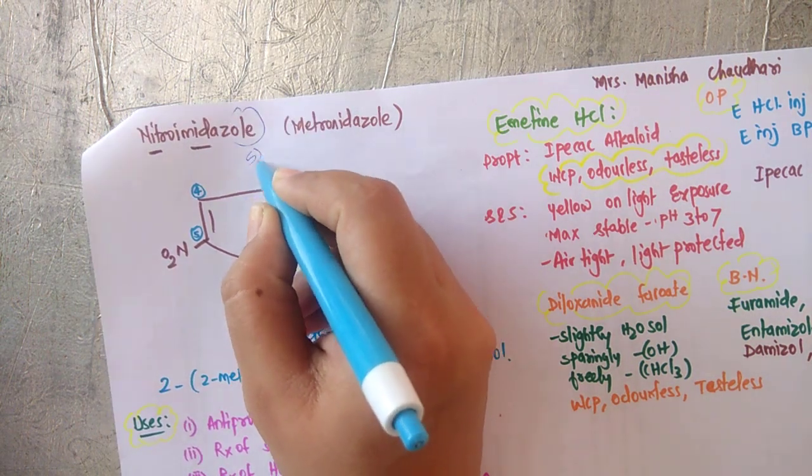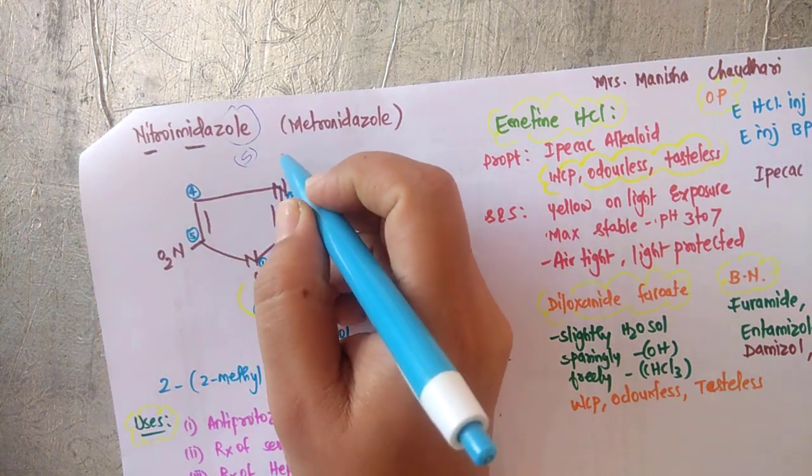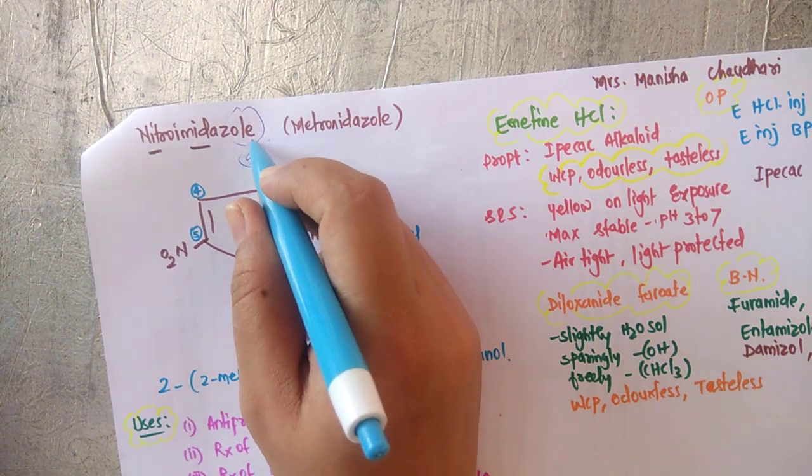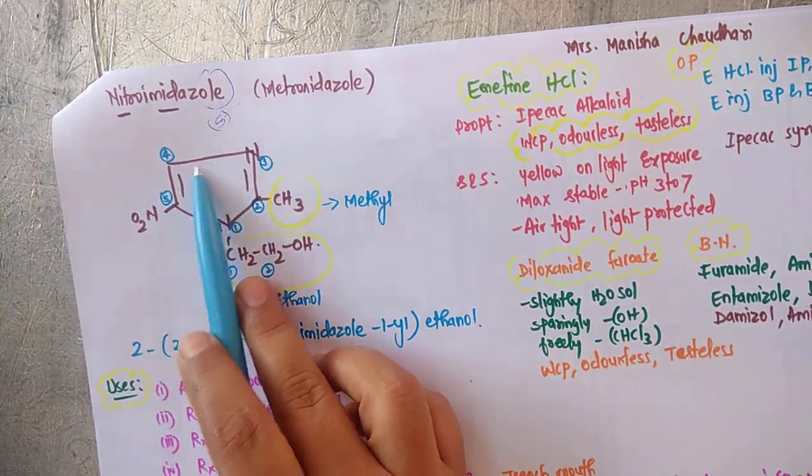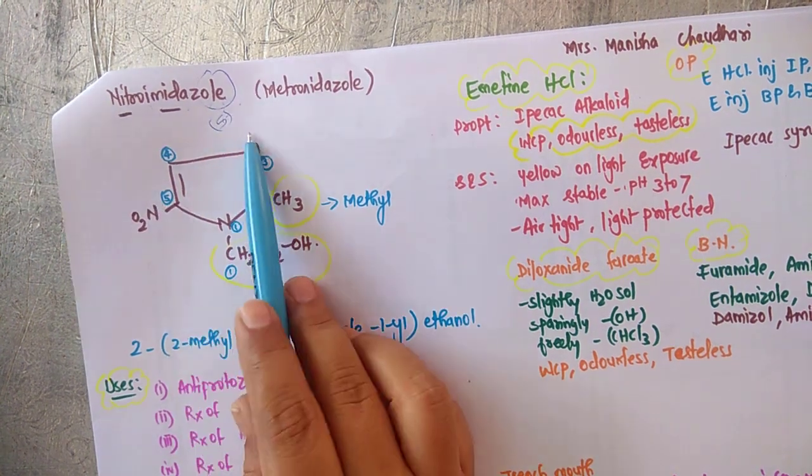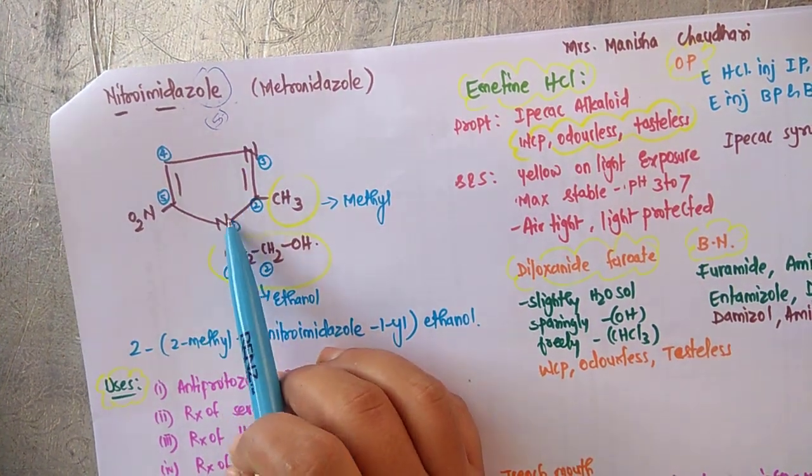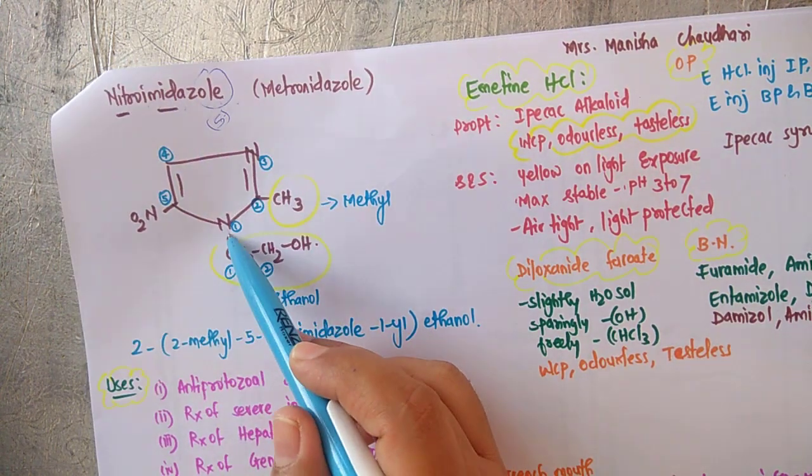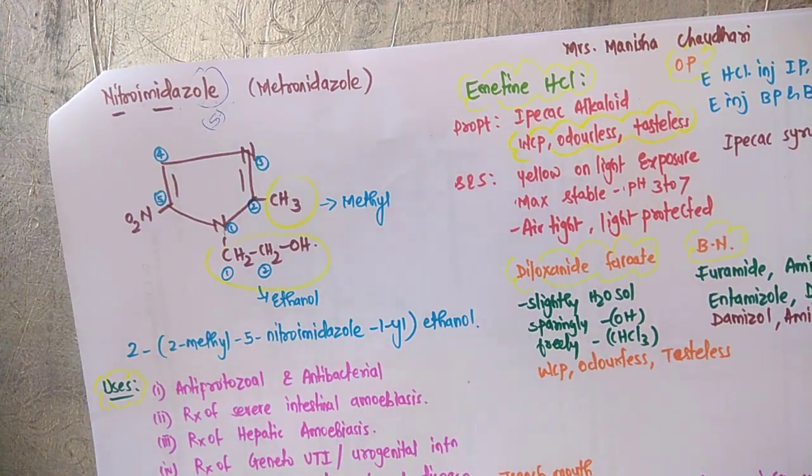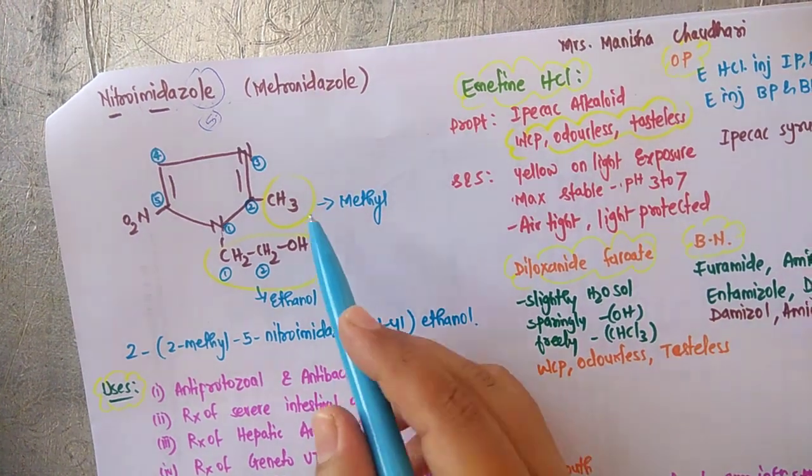Imidazole is a five-membered unsaturated ring containing two nitrogens. Since it's diazole, first position and third position nitrogen is there. These two which I have made a cloud, these two are the substituents.